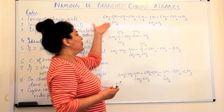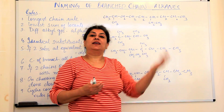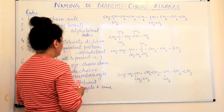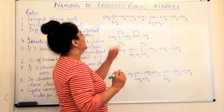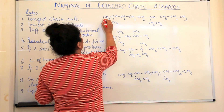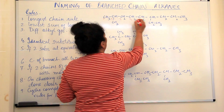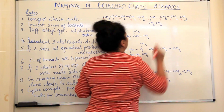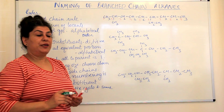The substituents are treated as branches and named accordingly with assigned locants. So the longest chain in this case — counting 1, 2, 3, 4, 5, 6, 7, 8, 9 — this hydrocarbon has 9 carbon atoms.